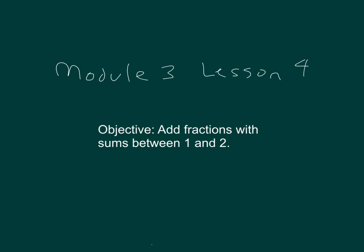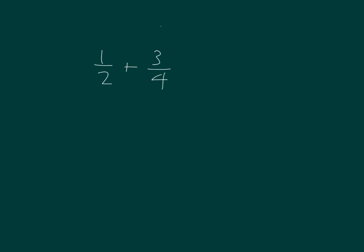The objective within this lesson is to add fractions with sums between 1 and 2. Here I have two fractions: 1 half and 3 fourths. What keeps us from just simply adding is that the units are not the same.